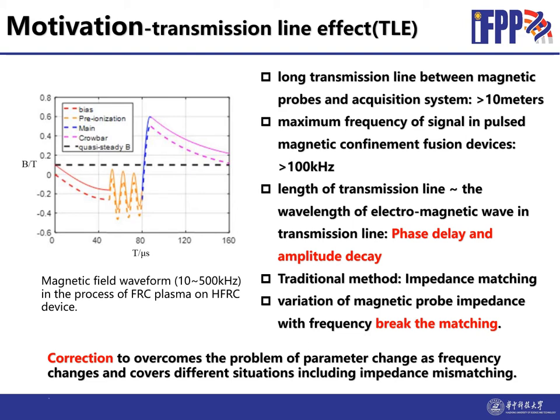The traditional way to deal with it is impedance matching methods, but the magnetic probe impedance varies with the frequency and breaks the matching. A correction is needed to overcome the problem of parameter change as frequency changes and covers different situations including impedance mismatching.